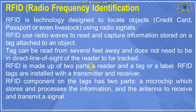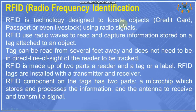The last topic in section 11.1.4 of your textbook is RFID — radio frequency identification. RFID is a technology designed to locate objects. It may be your credit card, passport, or even livestock, using radio signals. RFID is nowadays used in warehousing, government stock registers, grocery shops, railway stations, and bus stops. There are two types of RFID: active RFID and passive RFID.